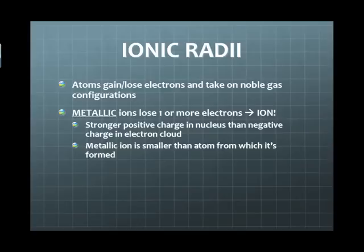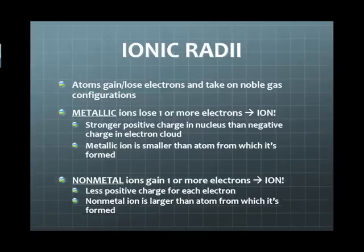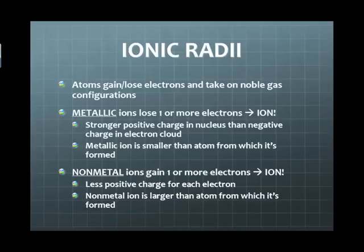Nonmetals are the opposite — they gain electrons to take on a negative charge. Because you have a greater number of electrons, the pull from the nucleus is a little weaker, and so you tend to get a larger ion than the atom from which it is derived.